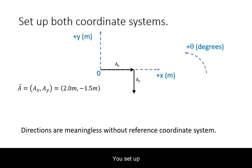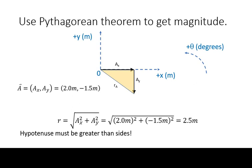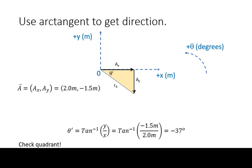You set up both coordinate systems, draw the right triangle, apply the Pythagorean theorem, and use the arc tangent to get the angle.